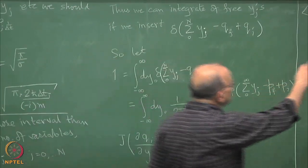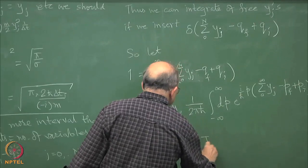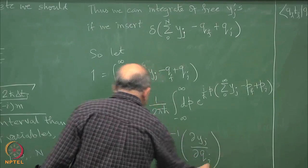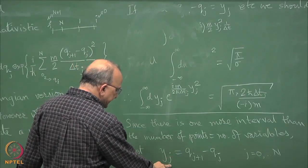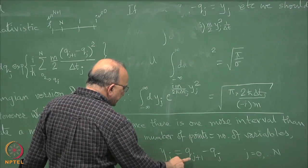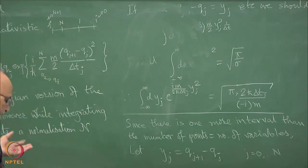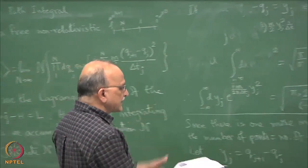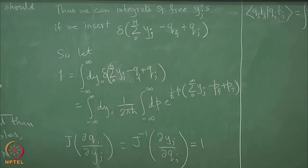The Jacobian is the inverse of dy/dq. We compute: dy_j/dq_j is equal to minus 1, but dy_j/dq_{j+1} or any other j is equal to 0. So you just get a product of minus 1's, which does not really matter because the Jacobian is after all the modulus of this. So the Jacobian of transformation is 1.